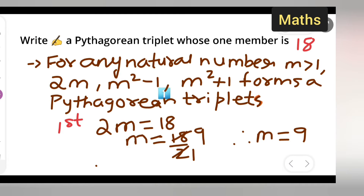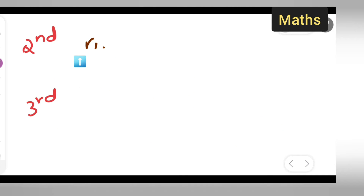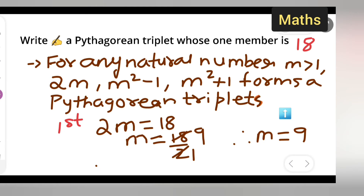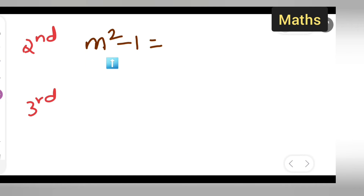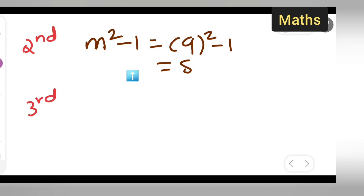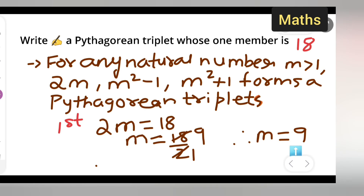The second triplet is m²-1. Substituting m = 9, we get 9² - 1 = 81 - 1 = 80.